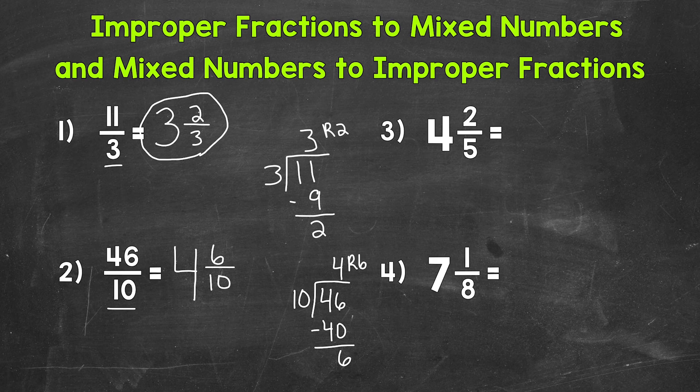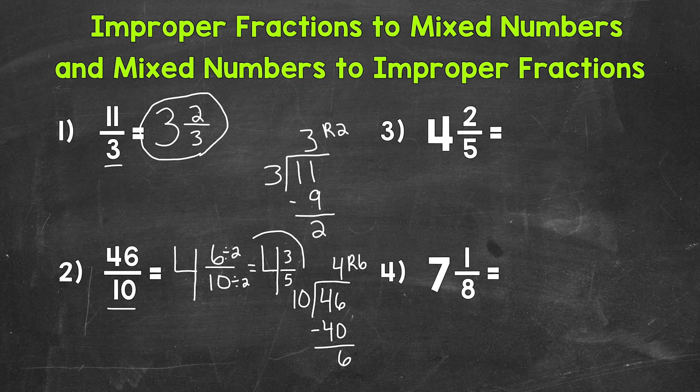Now the fractional part of the mixed number for number 2 can be simplified. We have a greatest common factor of 2 for the 6 and 10 here. So we can divide both of these by 2. And we get 4 and 3 fifths. 6 divided by 2 is 3. 10 divided by 2 is 5. So our final simplified mixed number is 4 and 3 fifths.